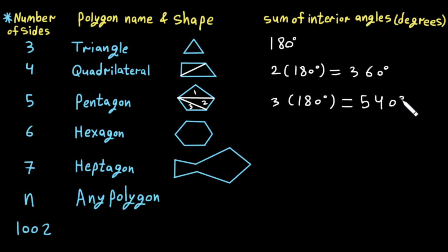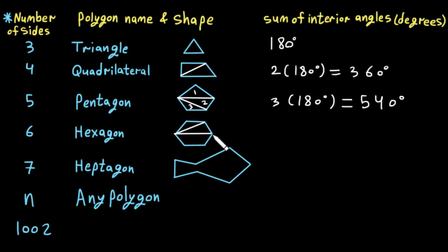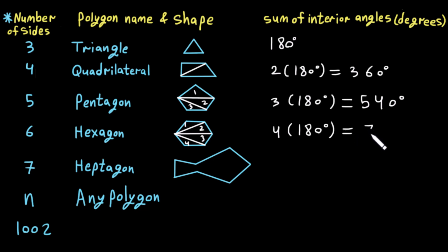Now for the hexagon — one, two, three, four, five, six sides. As we know, honeycomb cells in bees have a regular hexagon shape. Starting from one vertex and drawing diagonals, we get four triangles. So the sum of interior angles is four multiplied by 180 degrees, which equals 720 degrees.